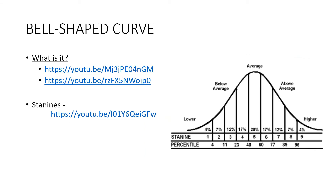A bell-shaped curve — also called a normal curve — is a key concept. There are two YouTube links provided that are really helpful, only a couple of minutes each. Please pause this lecture, visit those links, and just listen to understand how a bell curve works. There is also a YouTube video on stanines, which is another type of score conversion. A stanine of 6, for example, lets you know exactly where someone is positioned on the graph. Please watch these videos and then return to this lecture.